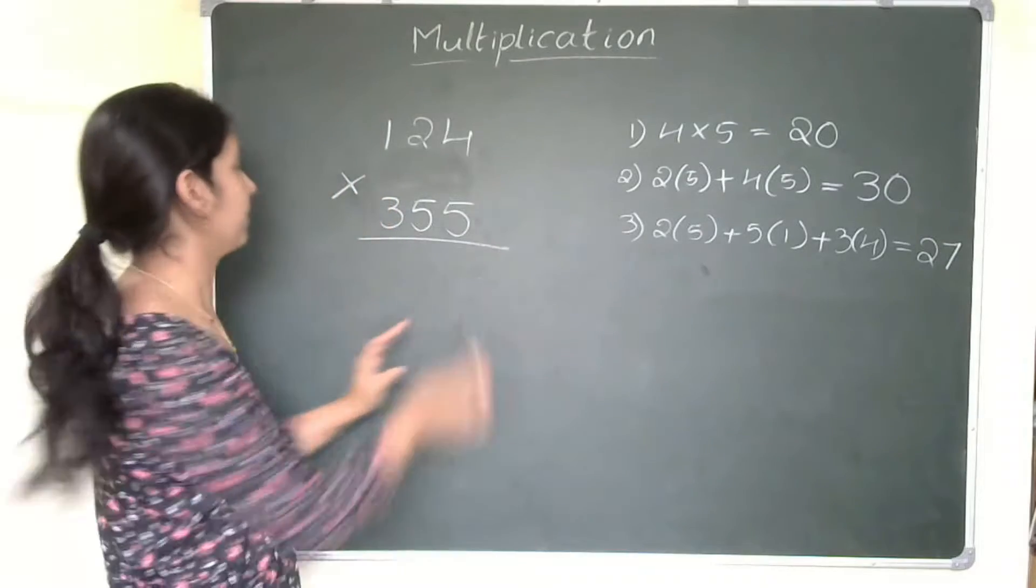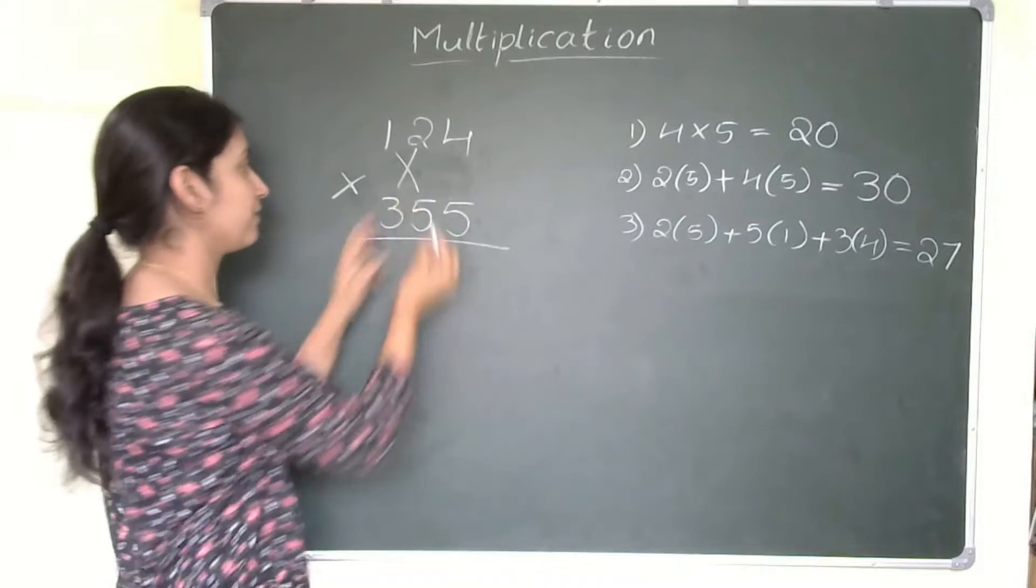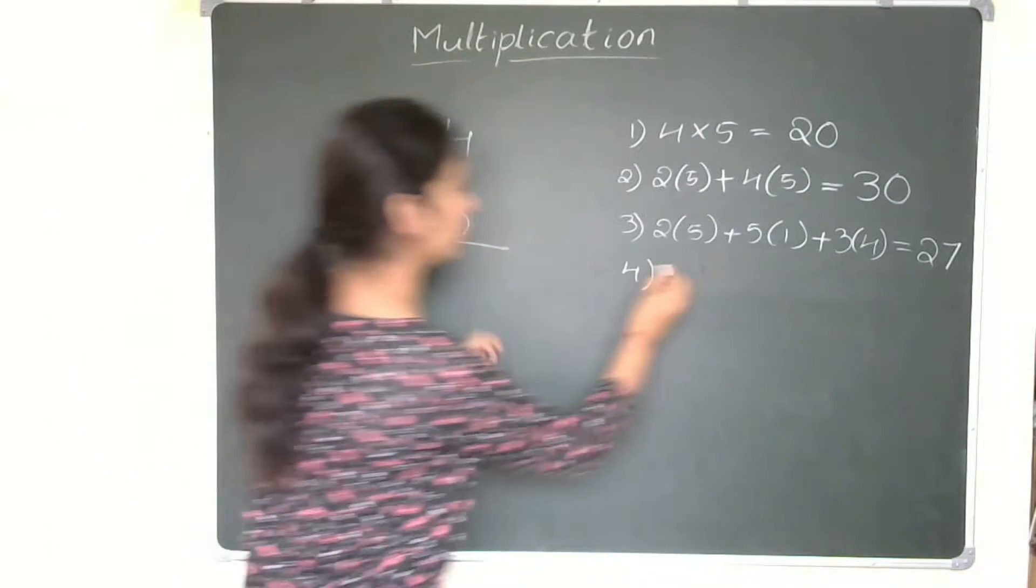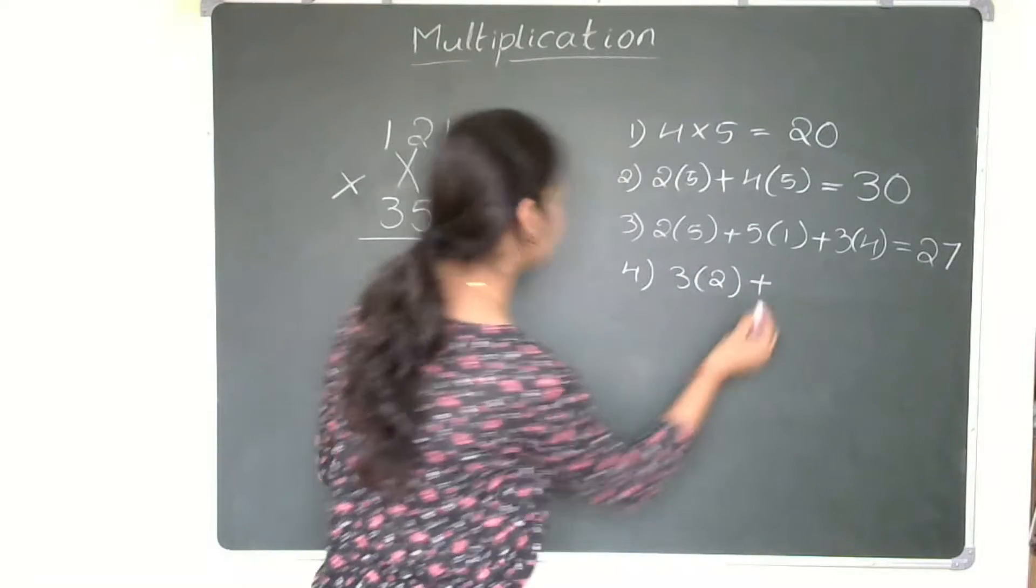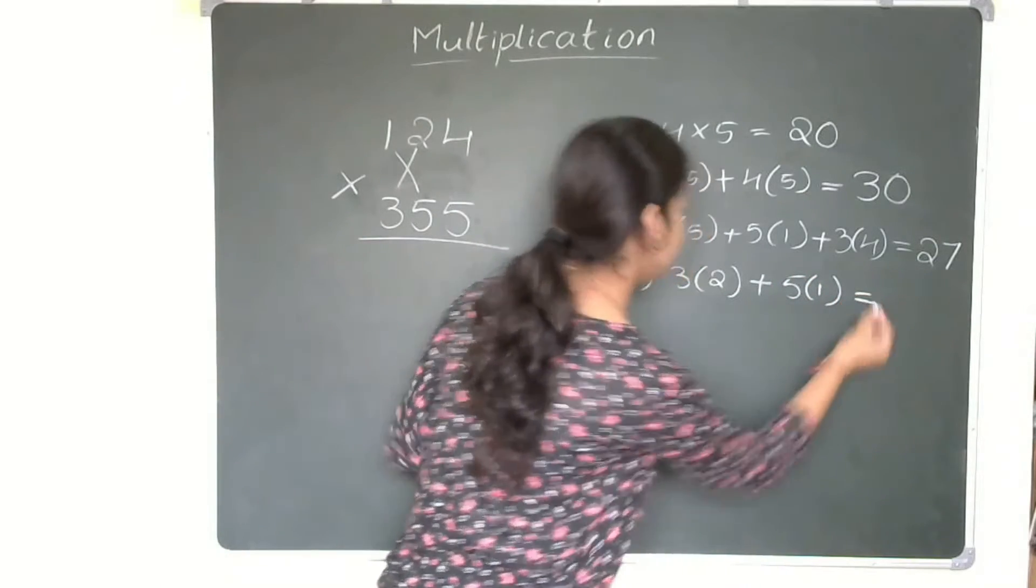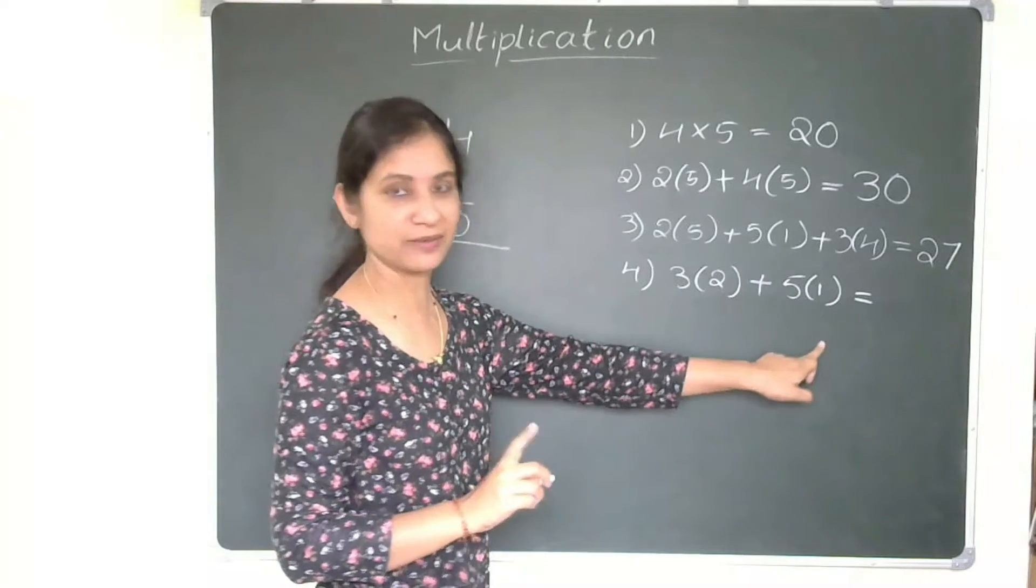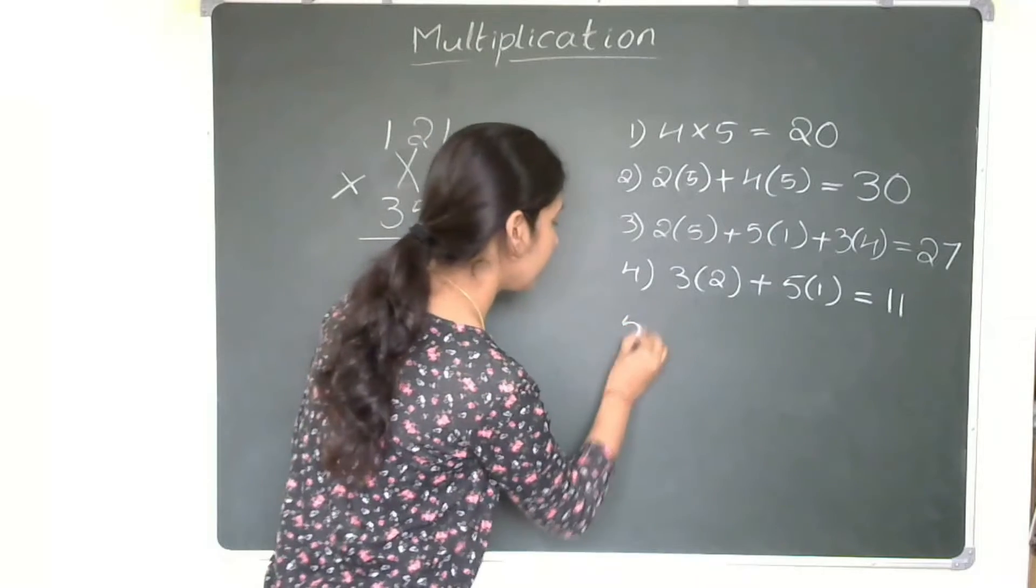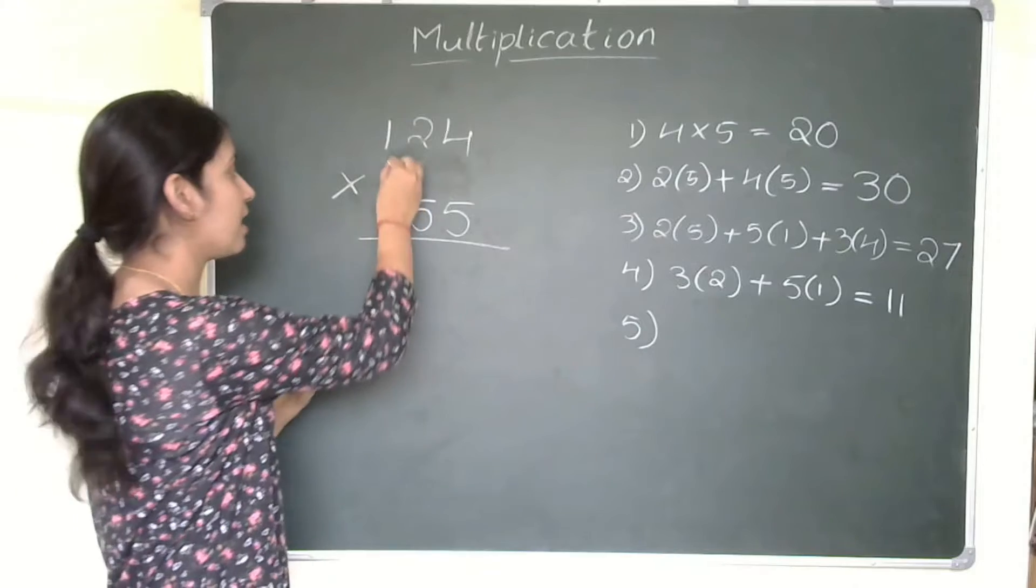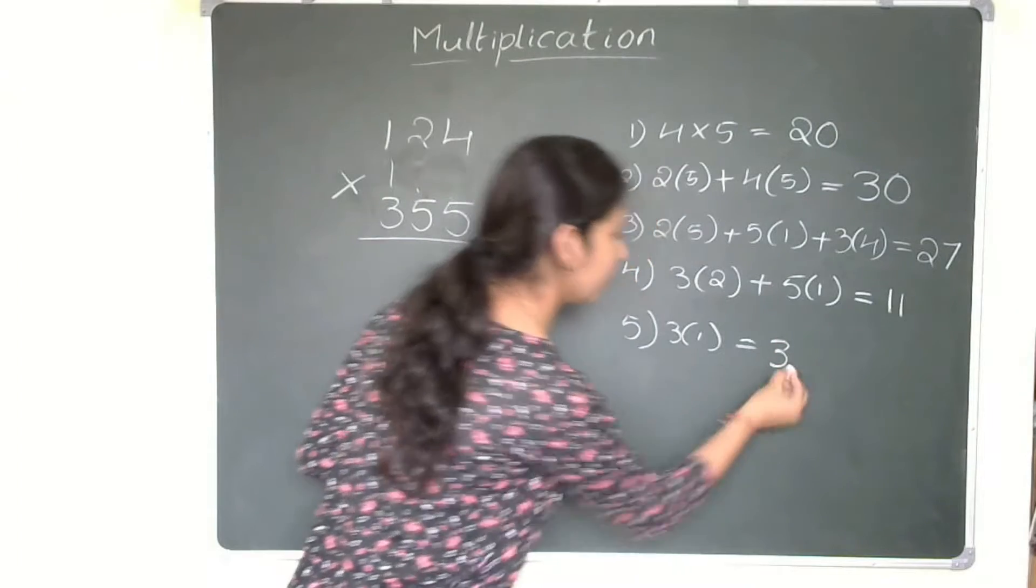Yes, the fourth step is multiply 2 and 3, and 5 and 1, then add the product. The fourth step is 2×3 plus 1×5. So what is the answer here? 2×3 is 6 plus 1×5 is 5. That means 6 plus 5, that is 11. Now, the last step is 1×3. Last step is 1×3. 1×3 is 3.